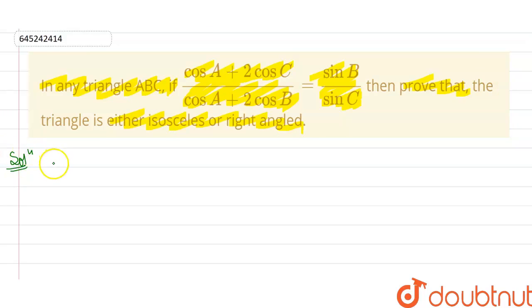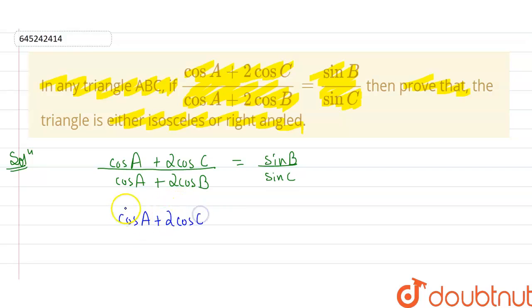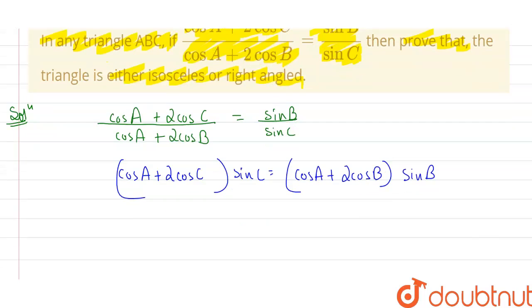Starting the solution: we have cosA + 2cosC divided by cosA + 2cosB equals sinB / sinC. If I cross multiply, this gives me (cosA + 2cosC) · sinC equals (cosA + 2cosB) · sinB. Opening the brackets: cosA·sinC + 2sinC·cosC equals cosA·sinB + 2sinB·cosB.